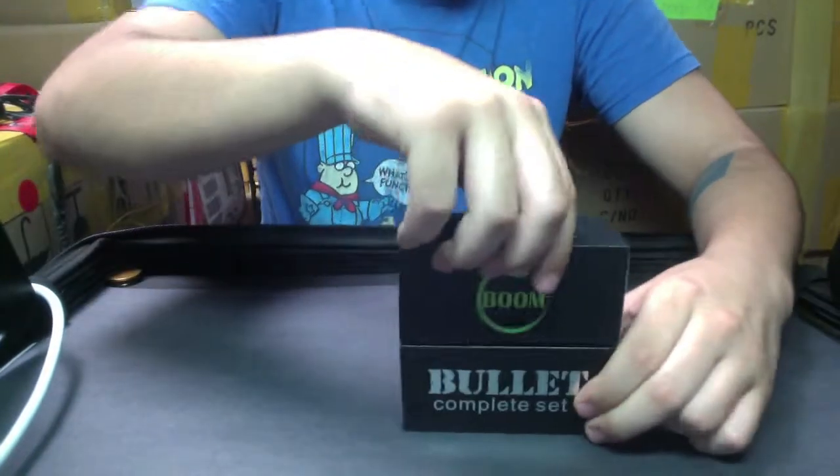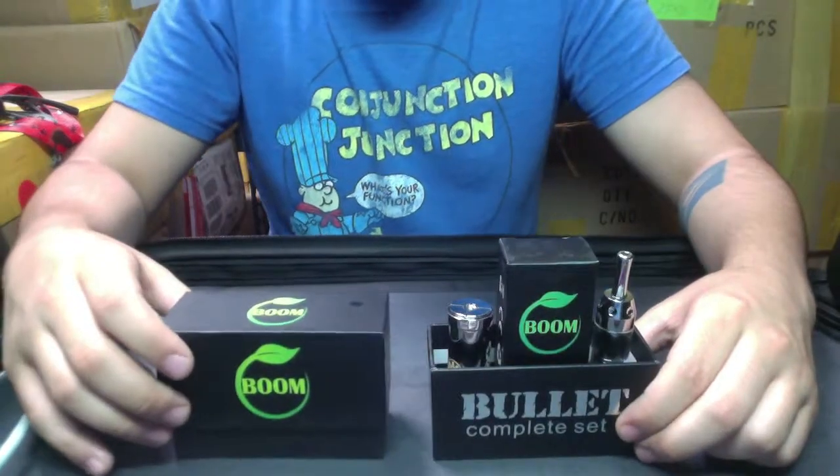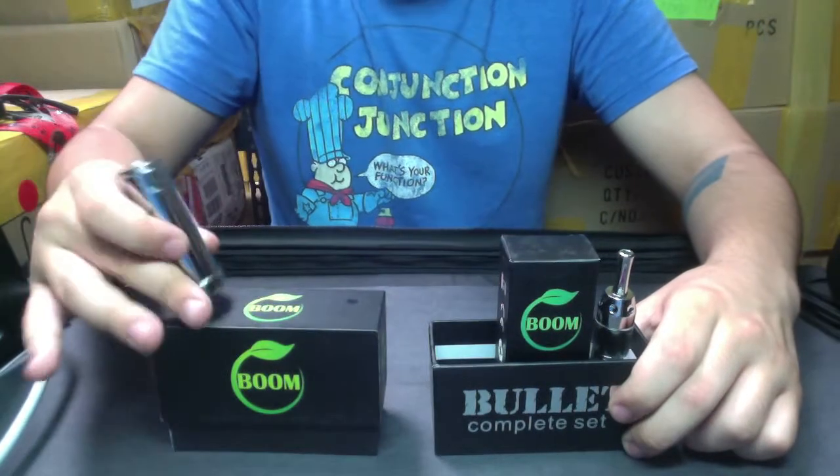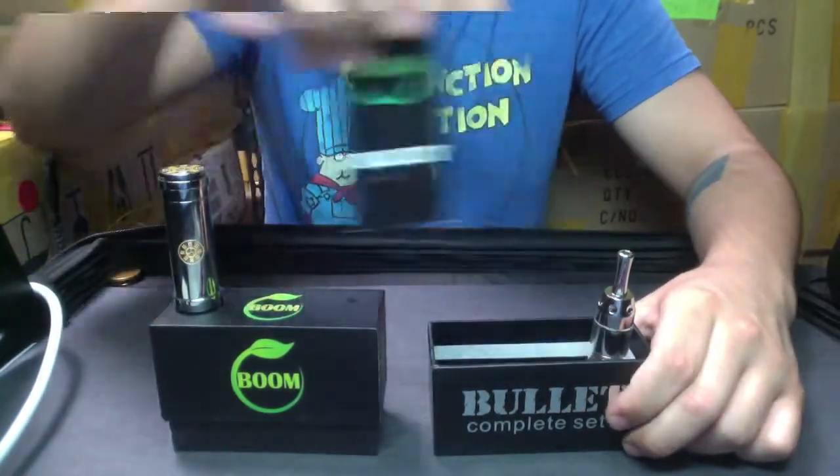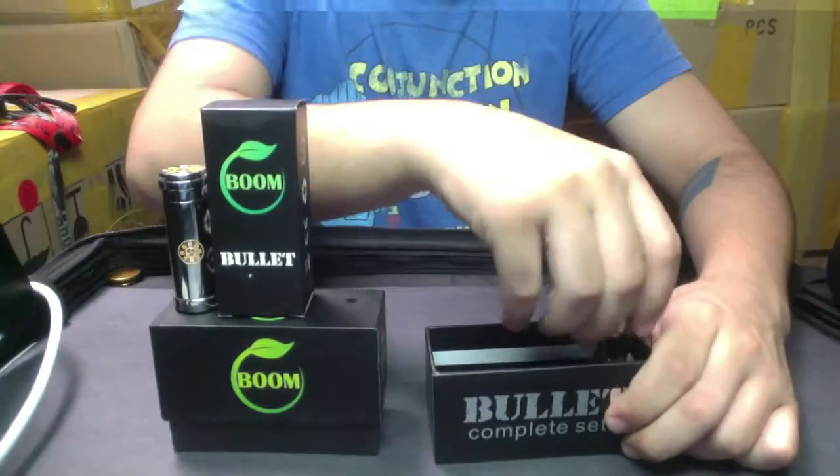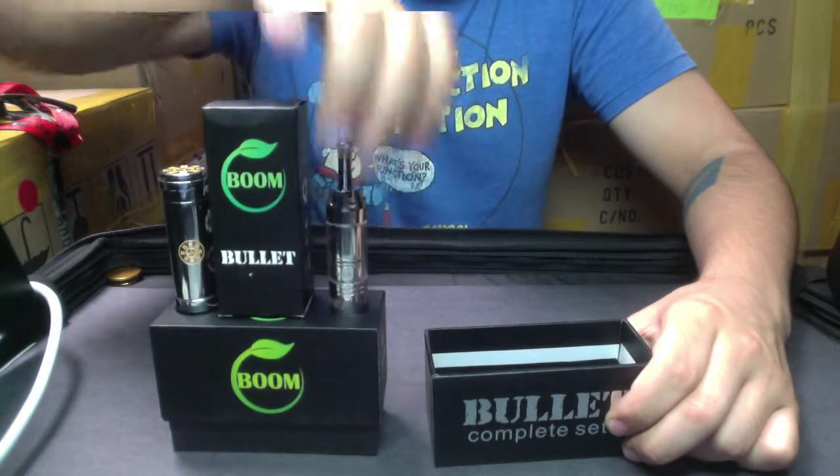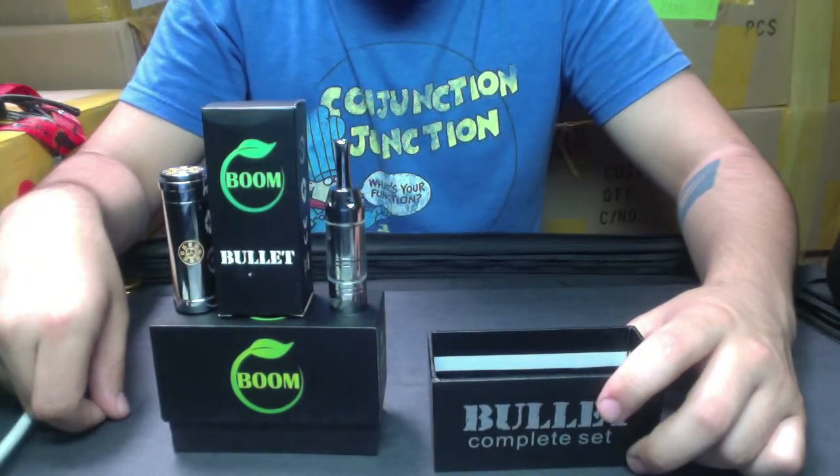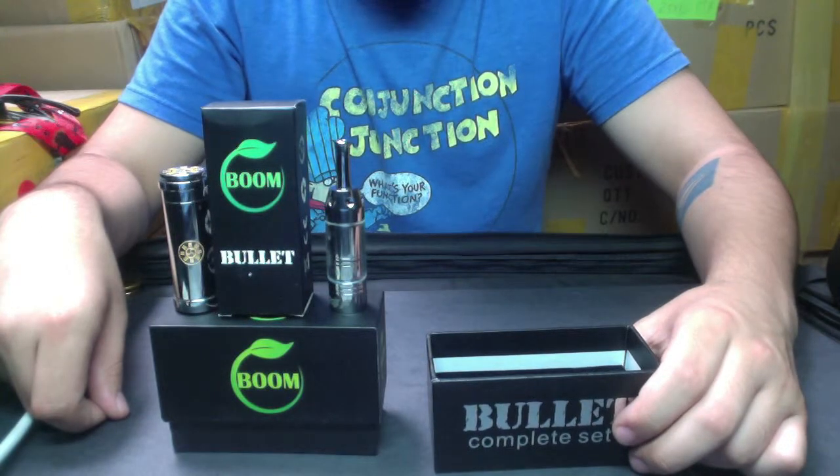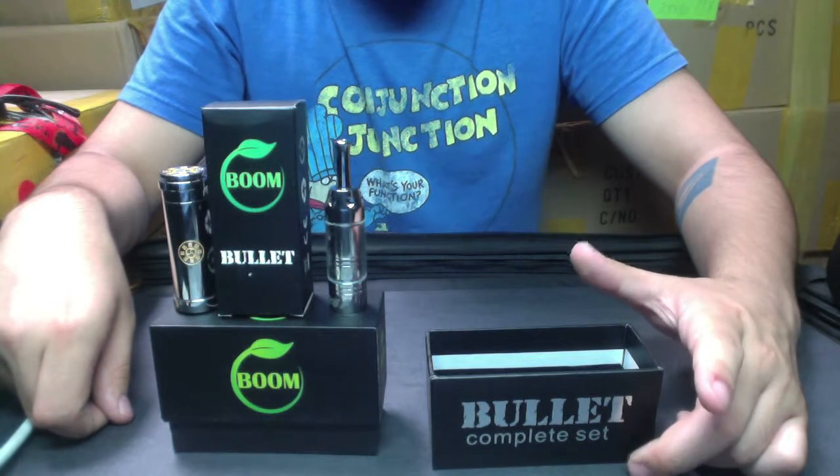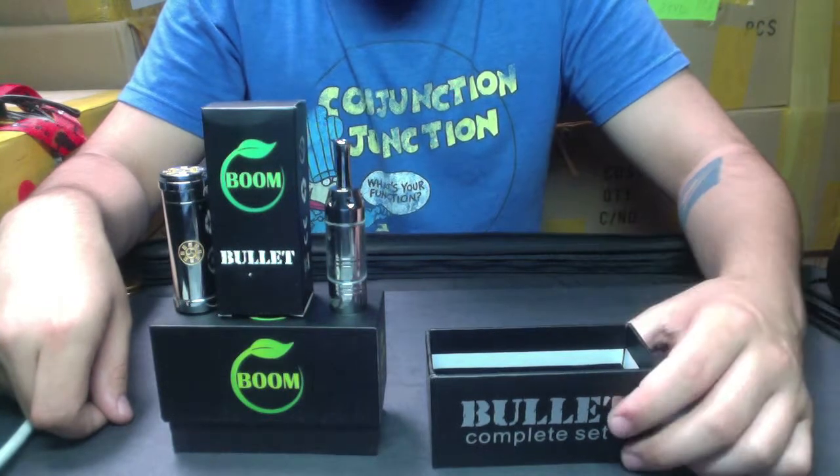So let's go ahead and get this opened up. What you have included inside is the battery power base, the charger wall adapter, and the complete tank biocam. That's everything inside the Bullet Complete Set box, and in a few moments we're going to show you how to pack and properly use your bullet.